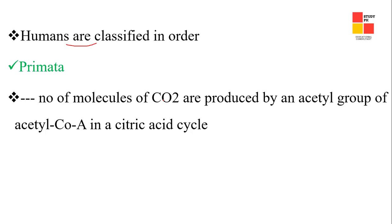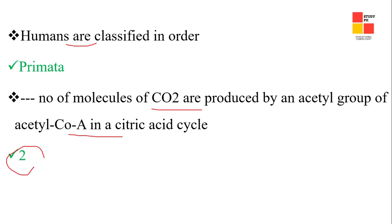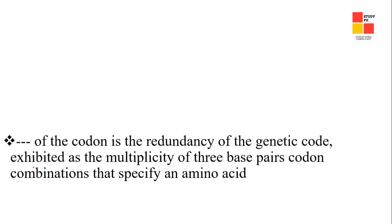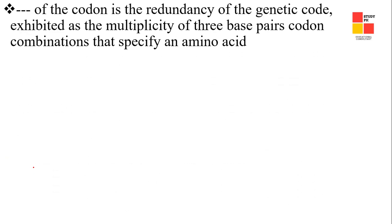Next one: the number of molecules of carbon dioxide produced by an acetyl group of acetyl coenzyme A in the citric acid cycle — the right answer is two. Next one: the property of the genetic code exhibited as the multiplicity of codon combinations that specify an amino acid is called degeneracy.